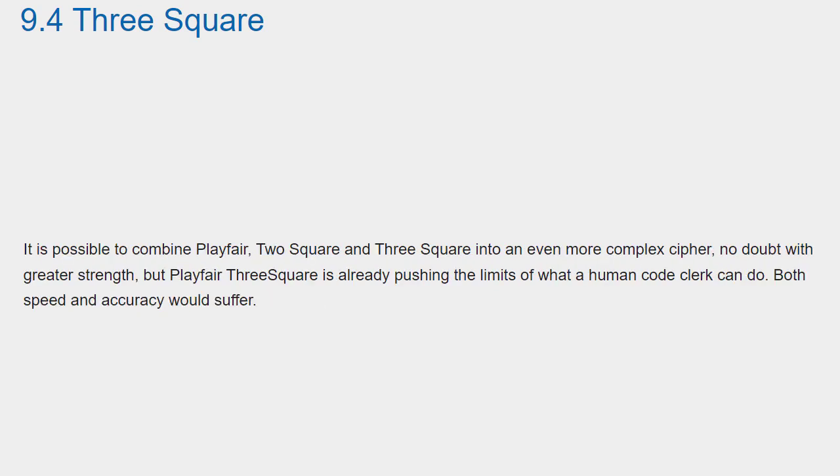It is possible to combine Playfair Two Square and Three Square into an even more complex cipher, no doubt with greater strength, but Playfair Three Square is already pushing the limits of what a human code clerk can do. Both speed and accuracy would suffer.